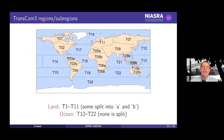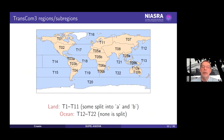This is the spatial resolution. There are 16 land sites, some of the T1 through T11 transcom regions. Normally there are 11 land regions, but it was thought that we should split Northern Africa, for example, into T05A and T05B — done as a protocol in the MIP. We're going to concentrate on T05A in a minute.